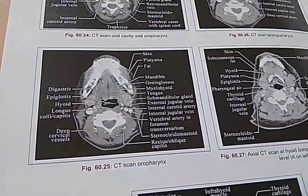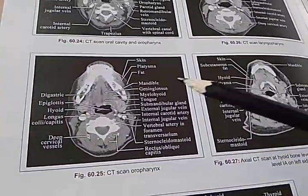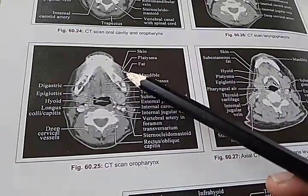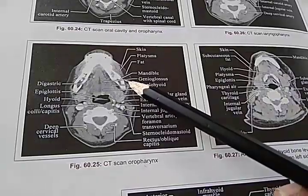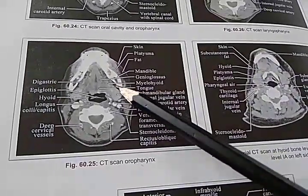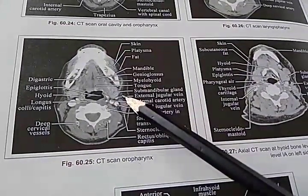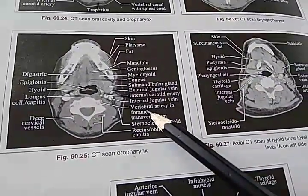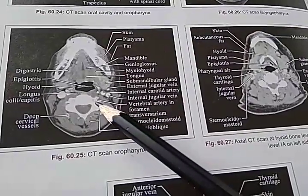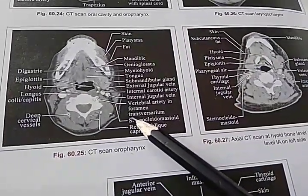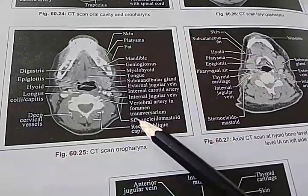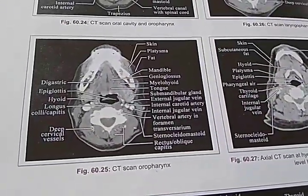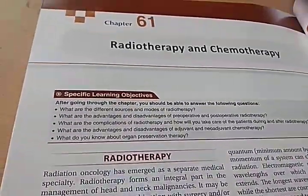This book is nice because everything is labeled and explained so well. CT scan of the oropharynx with detailed labels: skin, platysma, fat, mandible, genioglossus, mylohyoid, tongue, submandibular gland, external jugular vein, internal carotid artery, internal jugular vein, and vertebral artery in foramen transversarium. Such a labeled CT scan will really help.